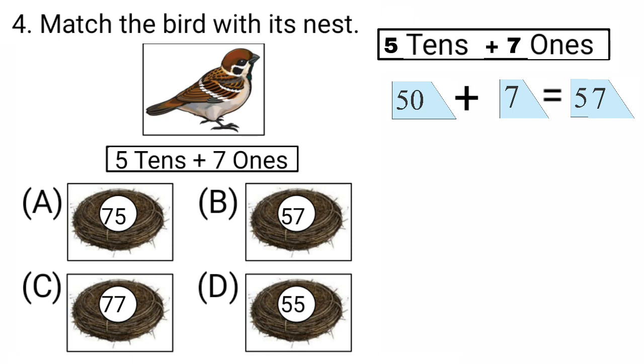Let's check all the nests. A is 75. B is 57. C is 77. And D is 55. So which one is the correct? Yes, we can see option B. 57 is the right answer. And we have put a tick mark here.